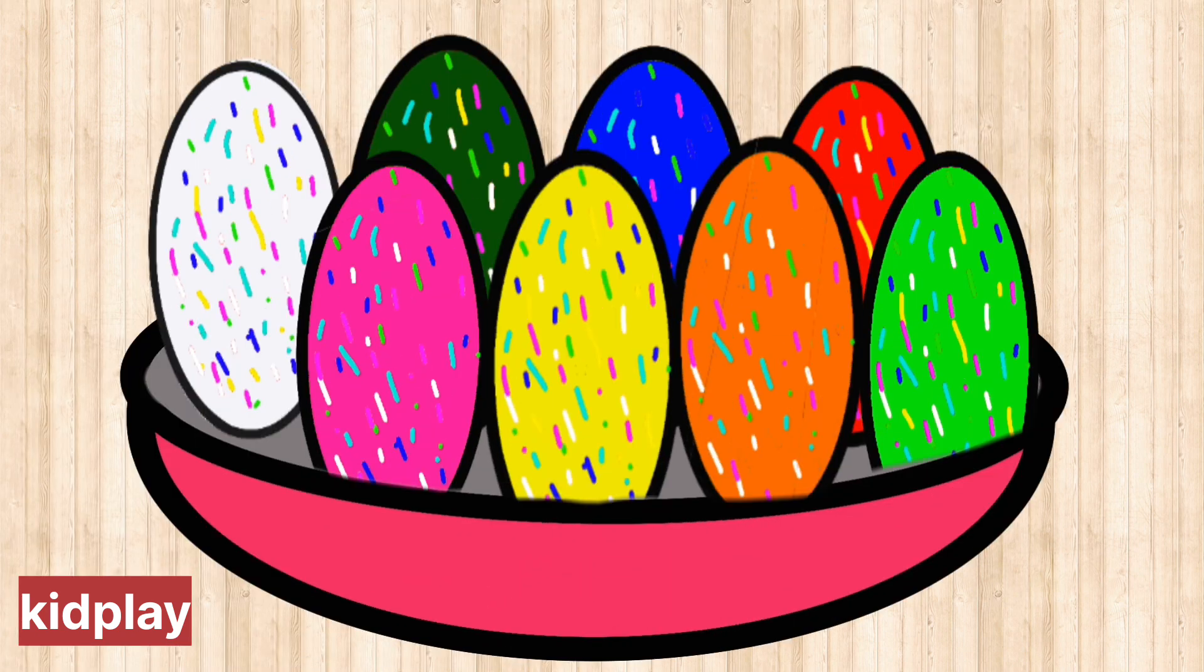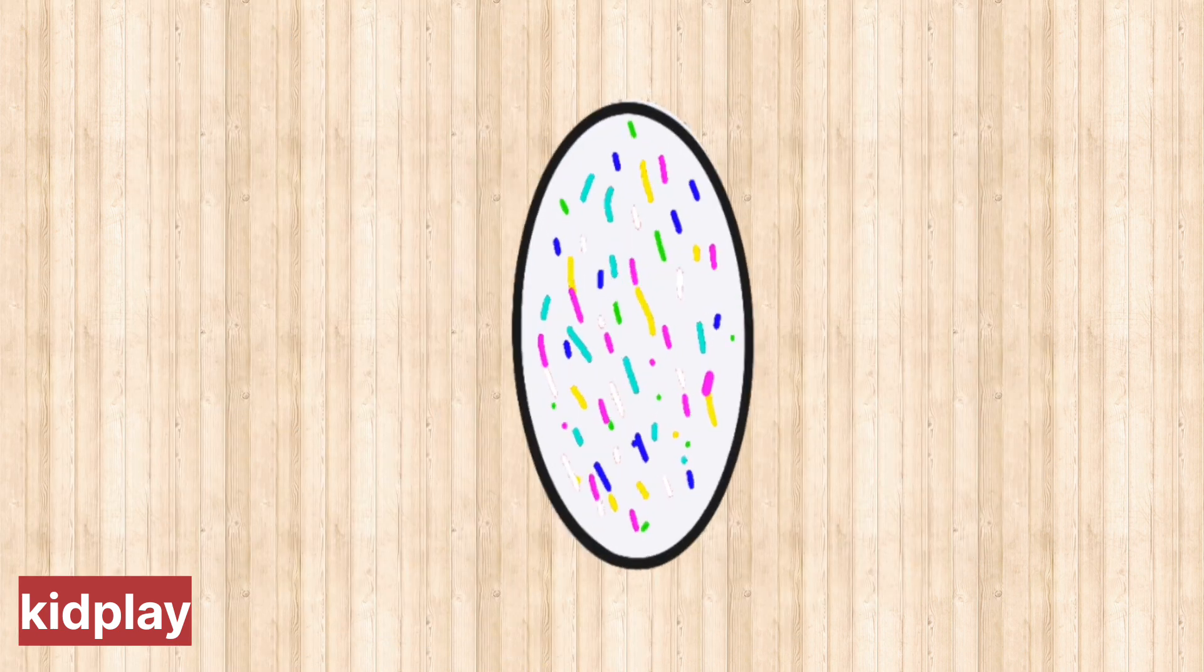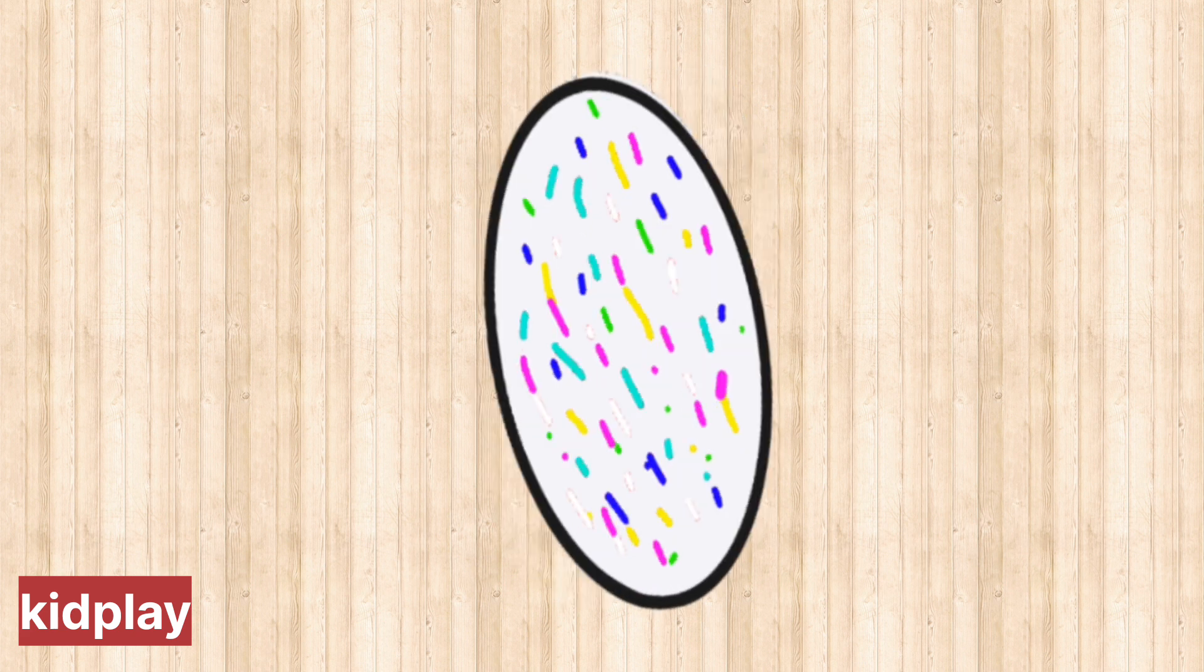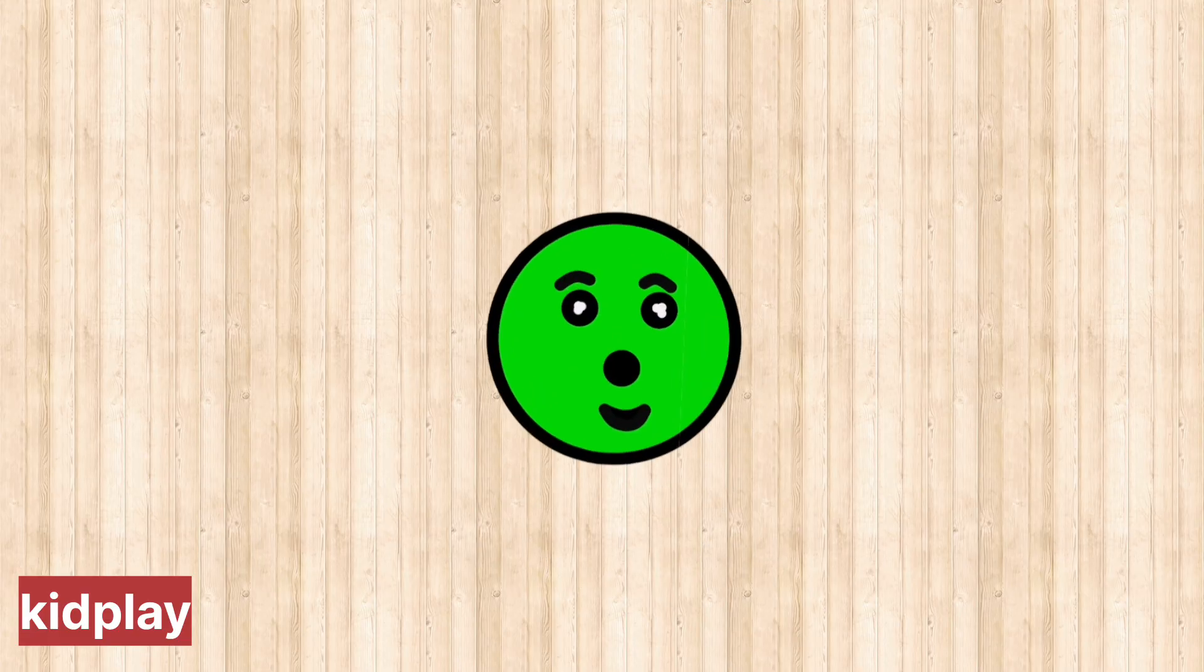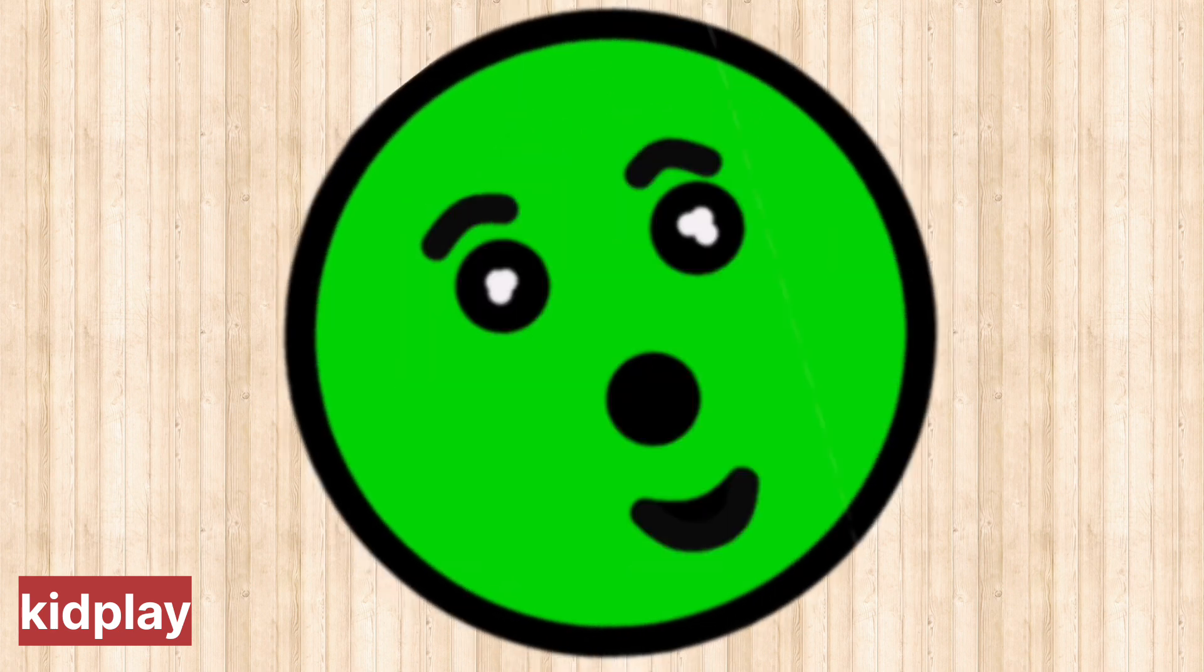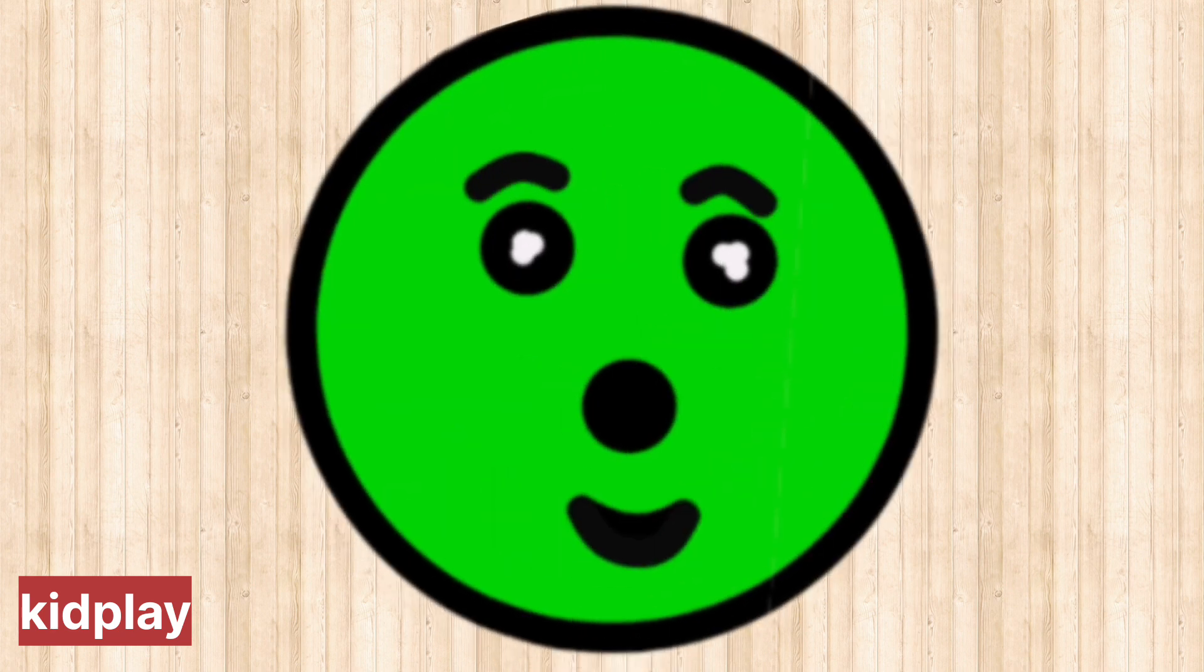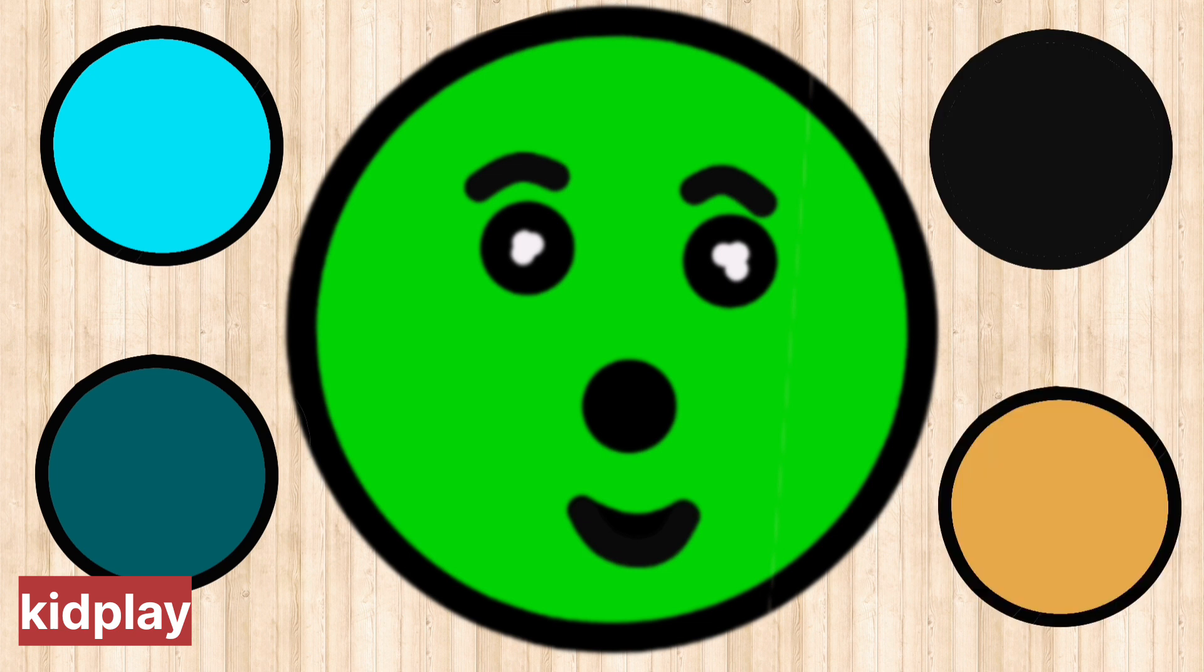We have colorful eggs, let's open them. Let's open the white egg. Circle, circle, round and round. Circle, I am circle, I have only one side.